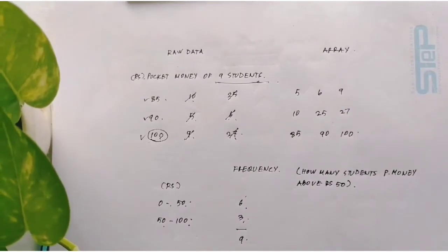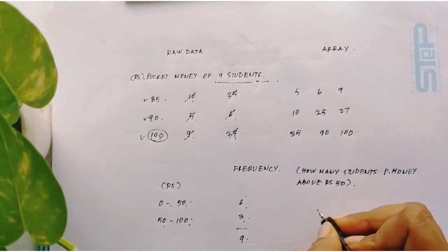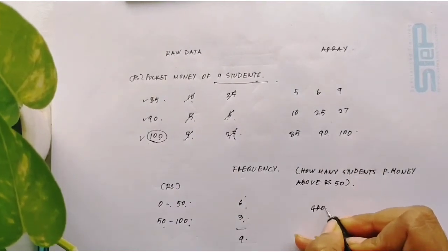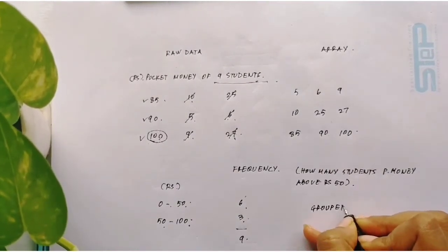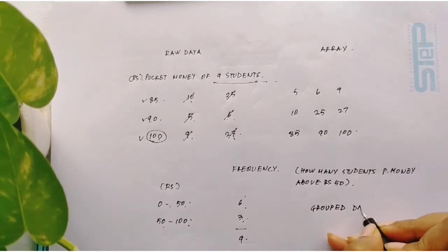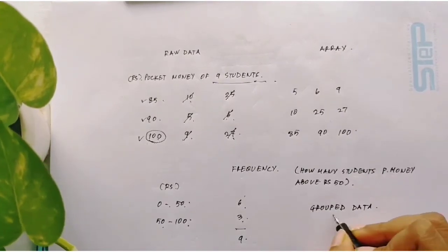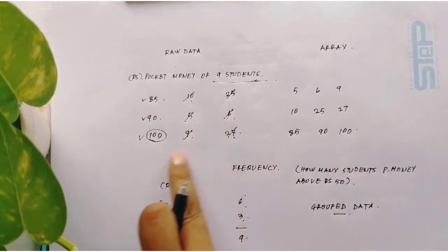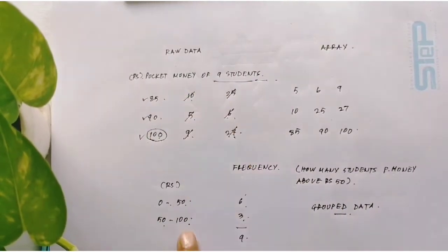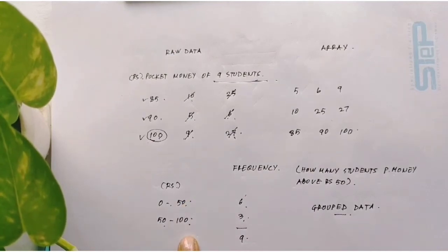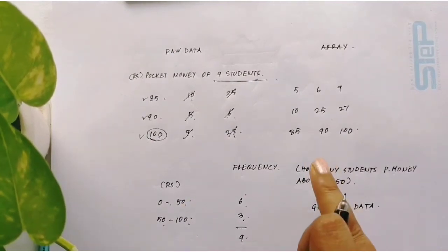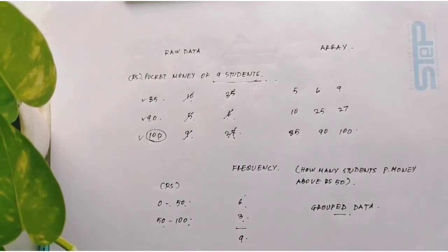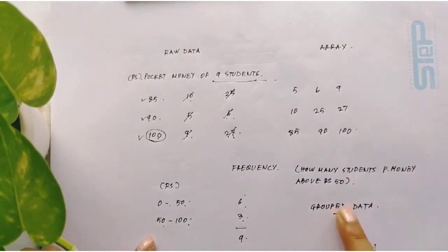Now the next question is what is grouped data? Grouped data is when we group these raw data just like this. Here there are two groups. So when we do any kind of work on the data, first we have to group them, and that process is known as grouped data.